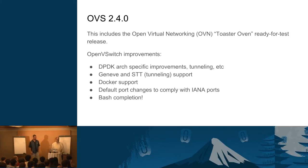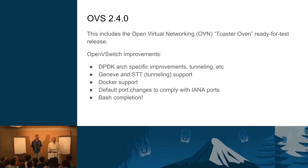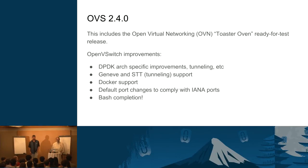OVS 2.4.0 is basically the release that is out with Liberty. I think all of the distributions are also providing that version of OVS now. It includes Open Virtual Networking's Toaster Oven release of OVN — that's the Ready for Test release. Open vSwitch itself also includes a lot of improvements: DPDK, which is basically fast hardware-enabled networking; Geneve support for additional tunneling; Docker support; some default port changes; and bash completion — that's my favorite one.